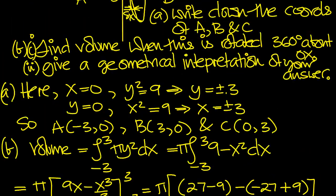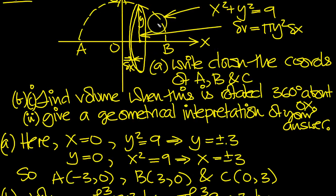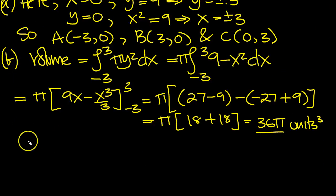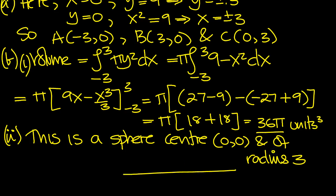Give a geometrical interpretation. Well, that was a half disk, a half circle. So if we rotate that around the x-axis, we're simply going to generate a sphere of radius 3, center O. So this is a sphere, part 2. This is a sphere, a solid ball, center at (0,0), and of radius 3 units.